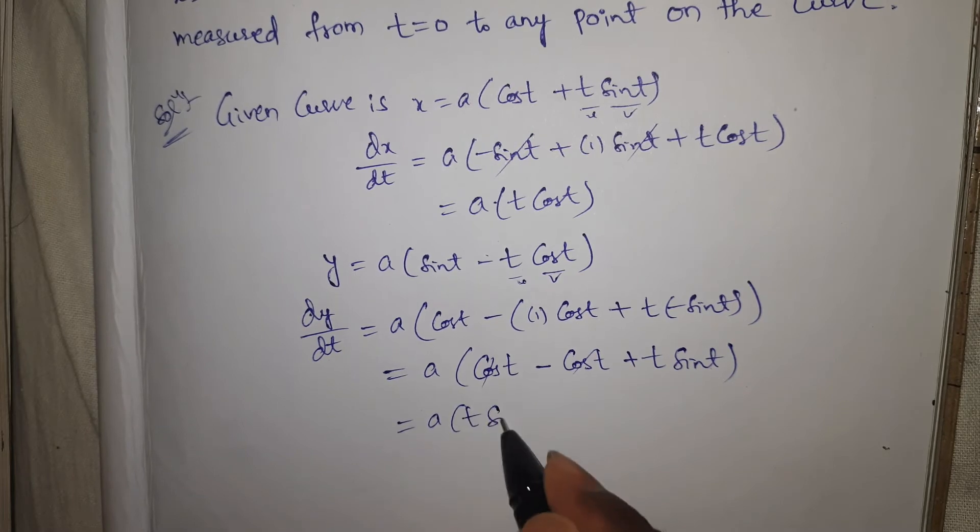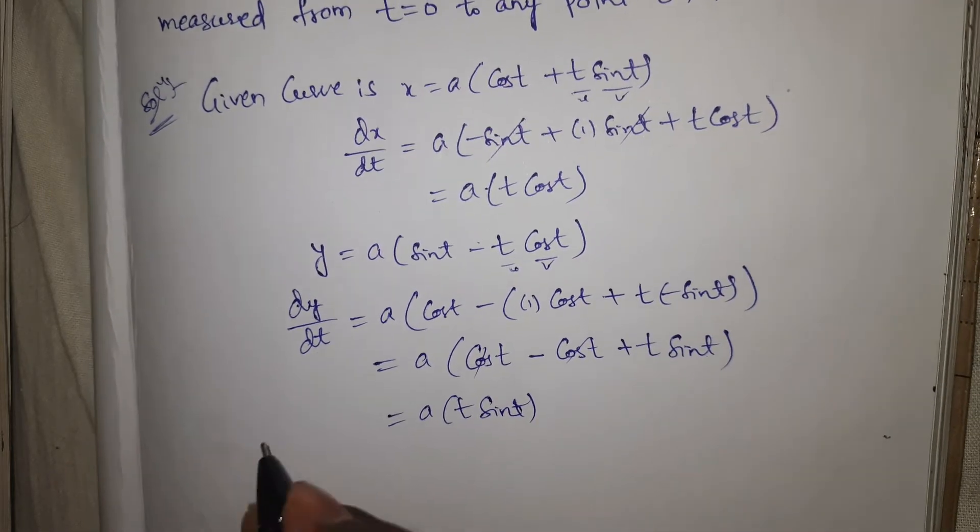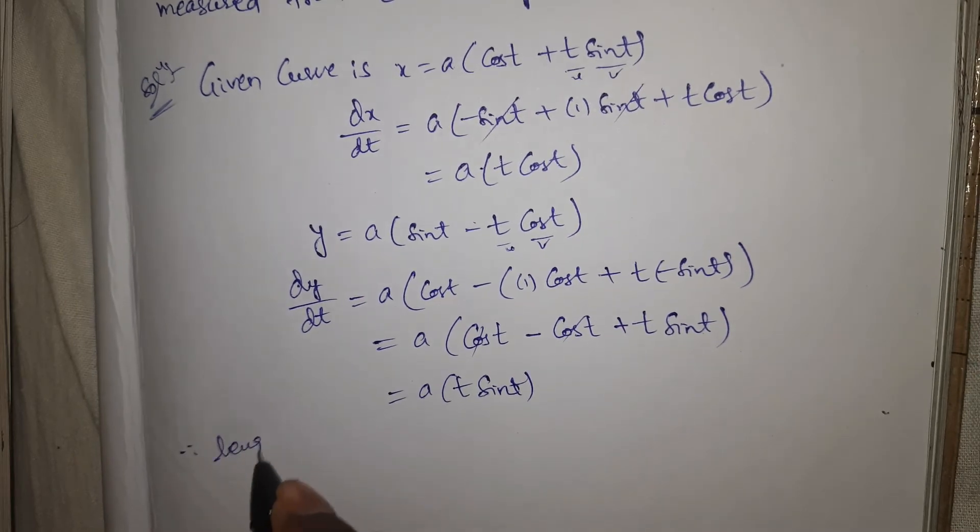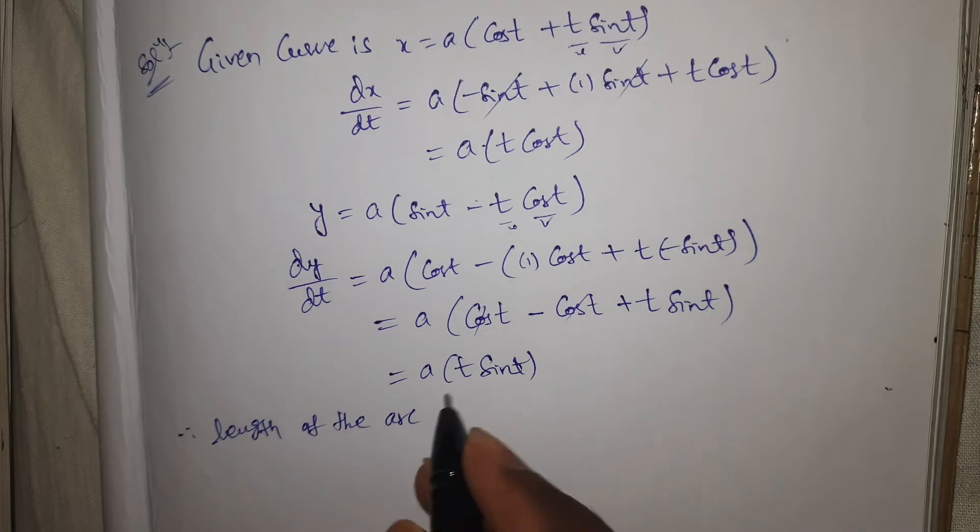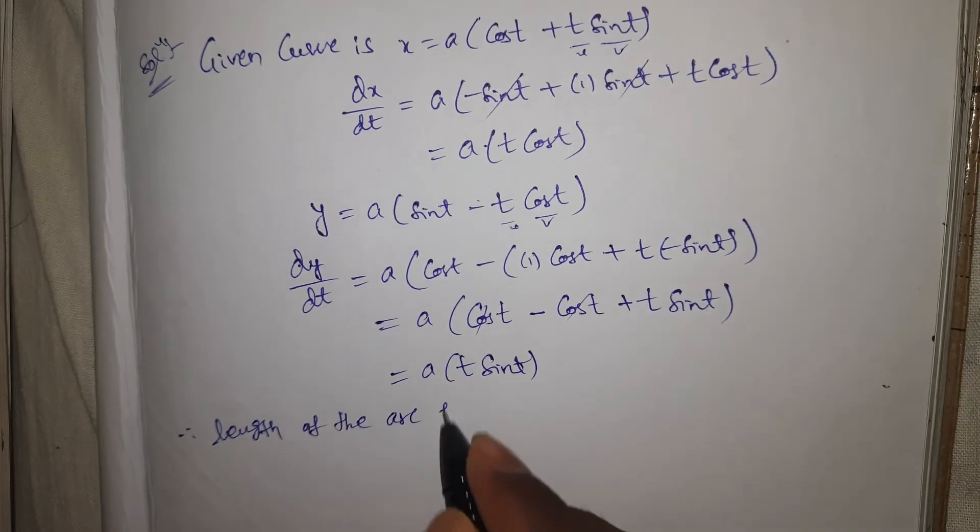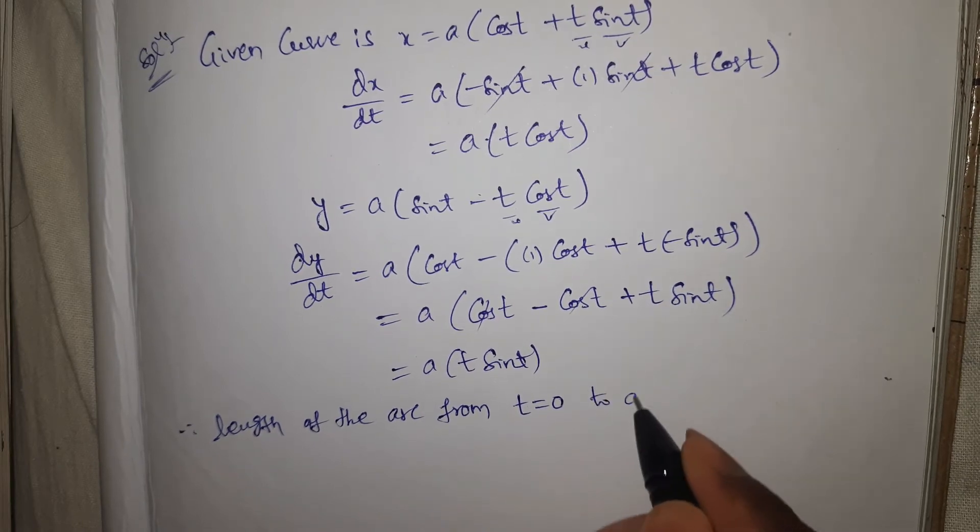Therefore, length of the arc from t = 0 to any point on the curve equals integral from 0 to t.